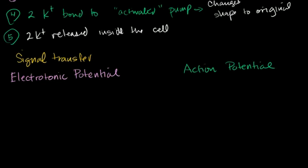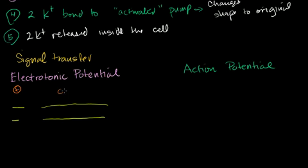Let's understand what these mean by looking at the membrane of a nerve cell or neuron. We know it's more positive on the outside than the inside. There's a lot more sodium on the outside than the inside, and a lot more potassium on the inside than the outside. The outside is more positive because our sodium-potassium pump pumps out three sodiums for every two potassiums it takes in.